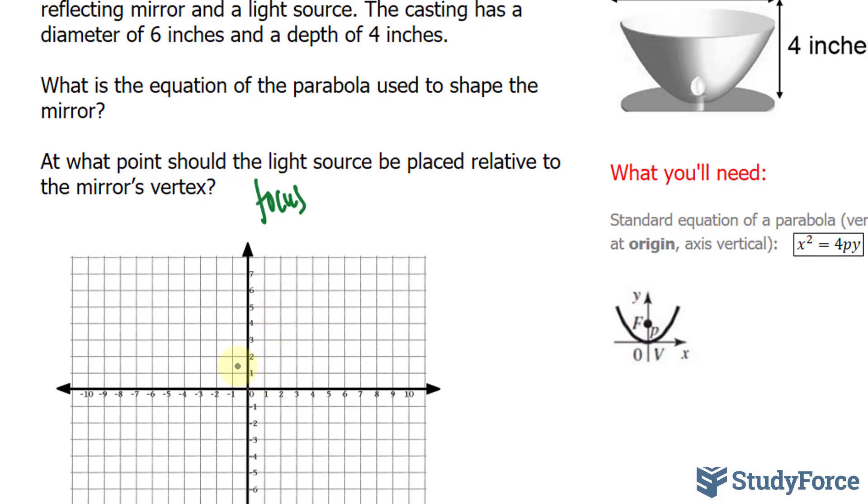We'll center it at the origin and since it's 6 inches wide, we'll divide that by 2. So you'll have two known points, one at (3,4) and one at (-3,4). And of course, the vertex would be right here so let's connect these points. This point, once again, is (3,4) and (-3,4).